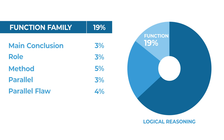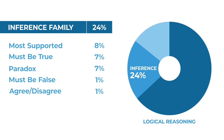Another important family is the function family — 19% of all logical reasoning questions belong to it. These questions measure our ability to abstract from the reasoning, to understand the purpose, role, and how things work within an argument. Finally, there's the inference family, which accounts for 24% of all logical reasoning questions. This family is about figuring out what we know based on what we just read — these tend to give us statements instead of arguments.